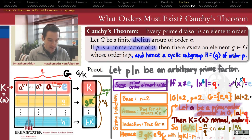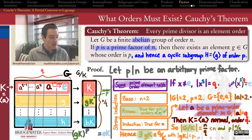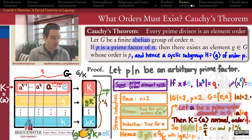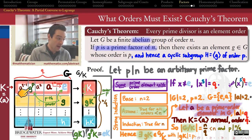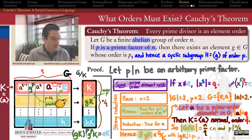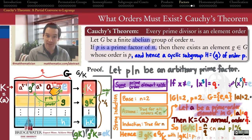Since gK has order P in the factor group, the P-th power of gK equals the identity of the factor group, which is K itself. But by how coset arithmetic works, the P-th power of gK equals g^P · K. So g^P lies in the same coset K as the identity — meaning g^P is an element of the cyclic subgroup K. The question is whether g^P is the identity element of K, or some other element of K.